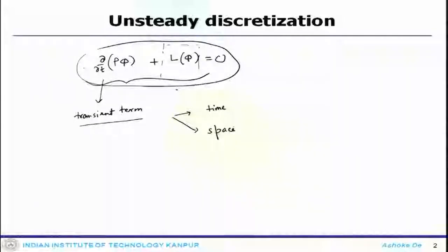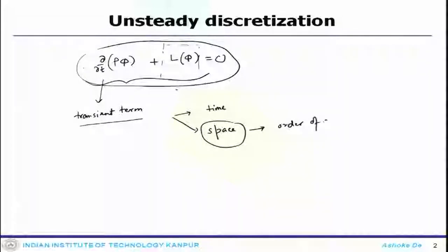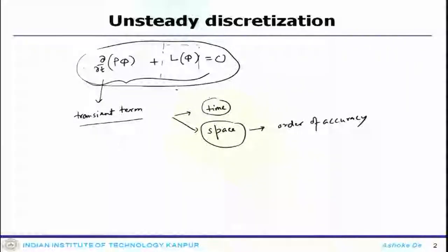What we have been doing so far is only spatial discretization, where we talk about order of accuracy — second order, third order, or first order. That is primarily the spatial discretization. Now in today's lecture we will look in detail at temporal discretization along with spatial discretization.